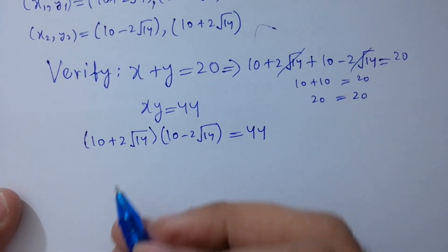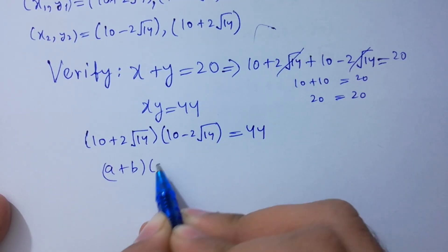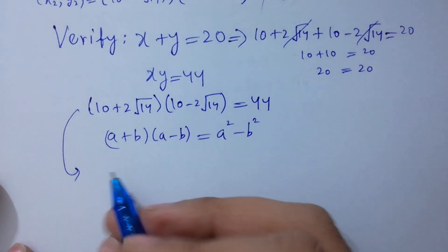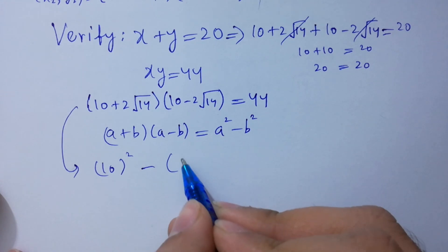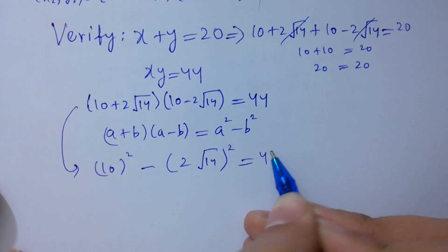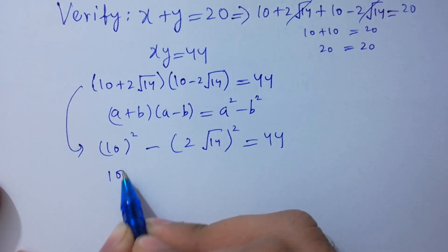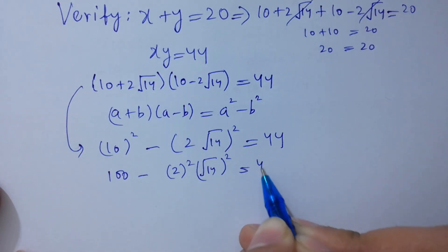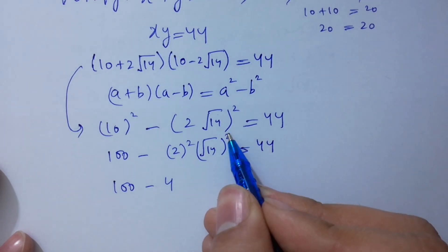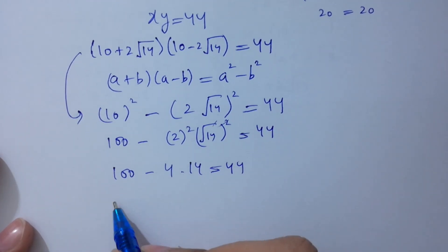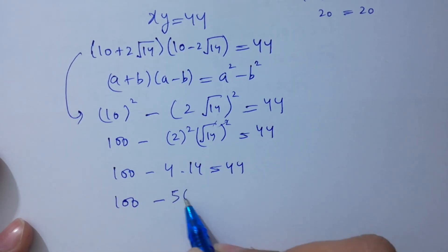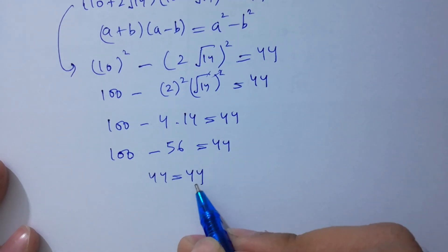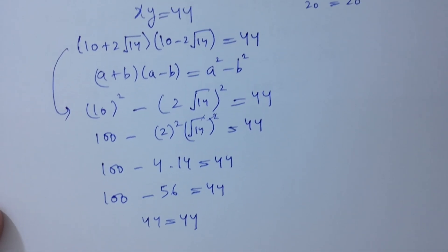This is of the form (a plus b)(a minus b) which equals a squared minus b squared. So we have 10 squared minus (2 square root of 14) squared equal to 100 minus 4 times 14 equal to 100 minus 56 equal to 44. This equals 44, which satisfies the equation. Thanks for watching this video, please subscribe to this channel to get notifications of my new videos.